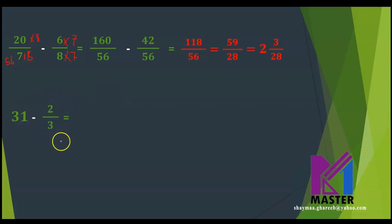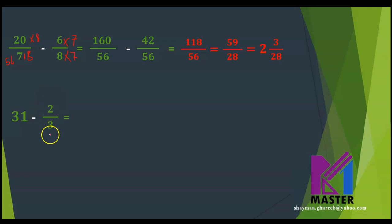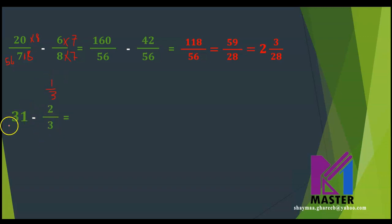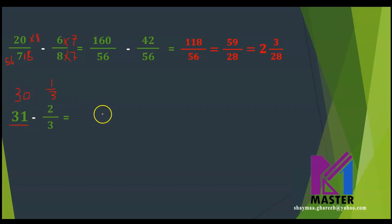31 minus 2 thirds. In order to subtract a fraction from the whole number, I will complete this fraction to be 1 whole. So 1 third and 2 thirds makes 1 whole, and I will go down 1 in the whole number — the 31 becomes 30. So the final answer will be 30 and 1 third.